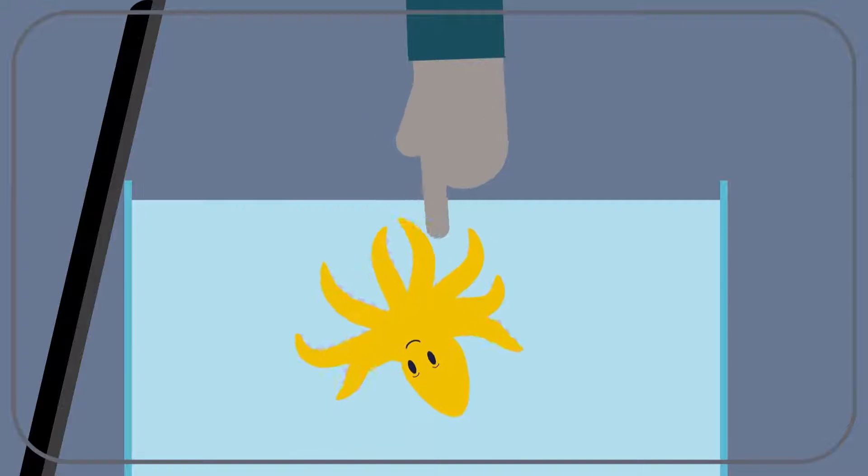Whenever he would get bored, Rami would dip a finger in the tank, and it would come up and wrap its arms and mouth around it. He thought a little octopus friend was being affectionate, but it was just as likely that it was trying to eat him.